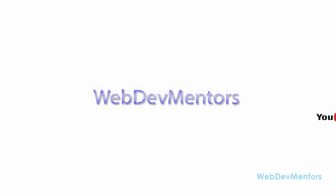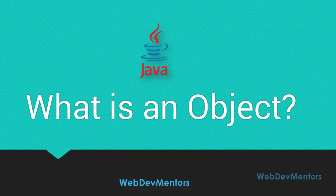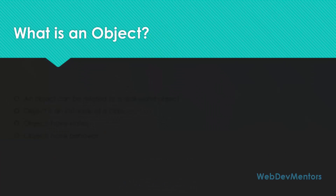Hello and welcome to Web2Menters YouTube channel. You are watching the 6th video of the Programming in Java series for beginners. In this video we are going to see about what is an object. An object can be related to a real-world object in object-oriented programming concepts. When it comes to object-oriented programming languages like C++, C Sharp or Java,